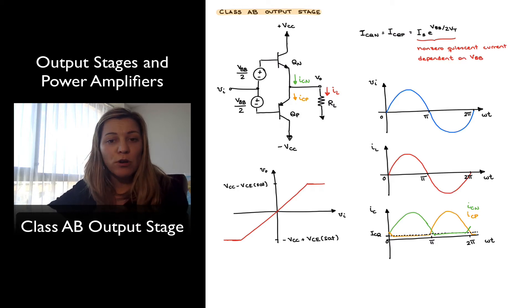I've drawn the same push-pull configuration as we have seen previously for the Class B stage, but notice that now I have included some biasing voltages connected to the bases of the QN and QP transistors, which are labeled VVB halves applied to the base of QN and negative VVB halves or VVB halves below the input to the base of QP.